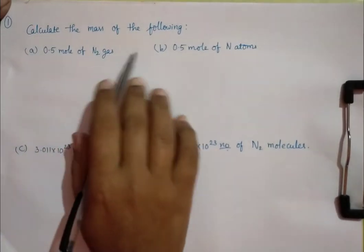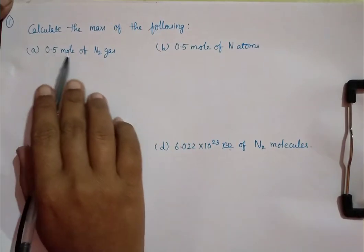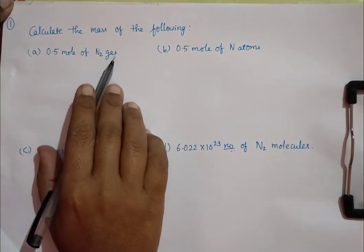Let us calculate the mass of the following: 0.5 mol of nitrogen gas.